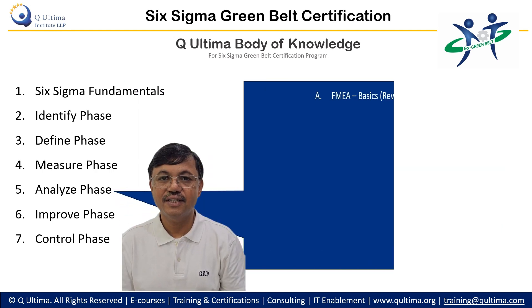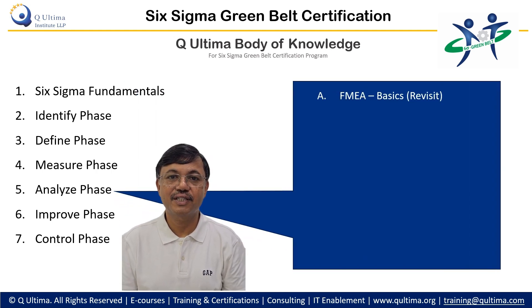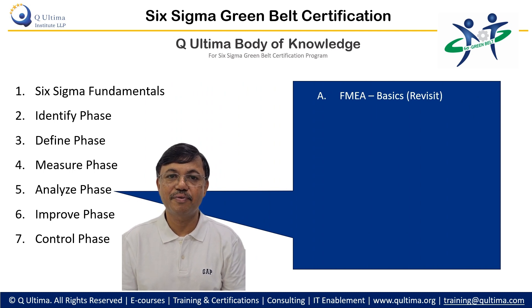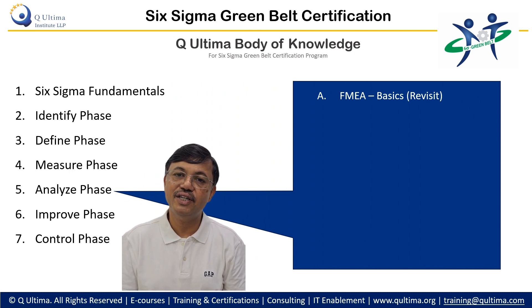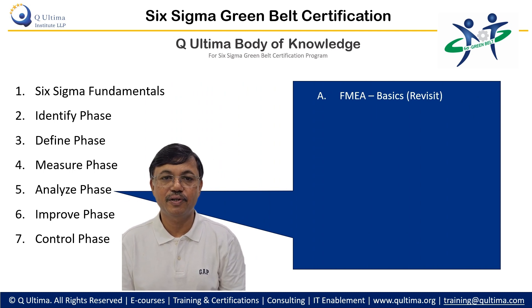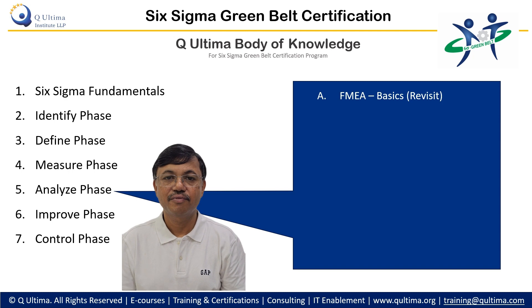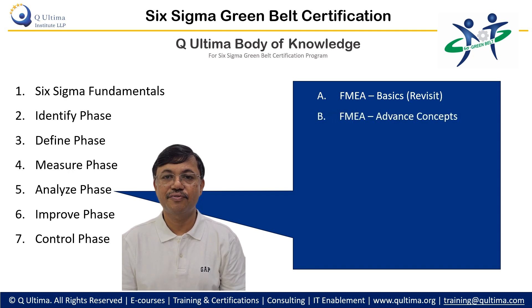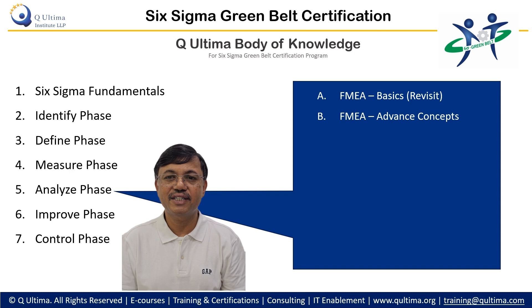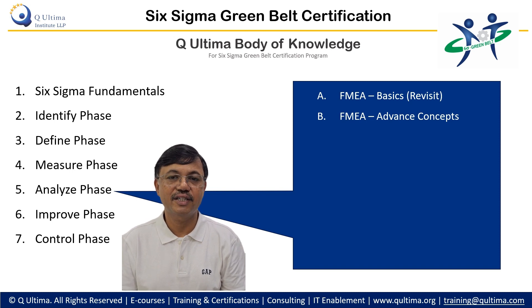Finally in the Measure phase, we will do a capability study to understand the gap between best possible and present performance, and validate whether the target is adequate or not. In the Analyze phase, we will discuss basic concepts of FMEA which we have already covered in the Yellow Belt course, then advance to FMEA concepts where we better our understanding of severity, occurrence, and detection ratings.